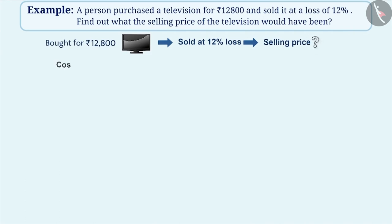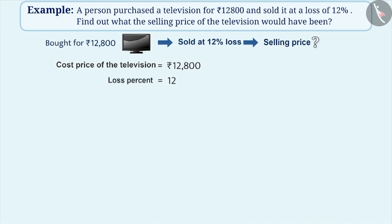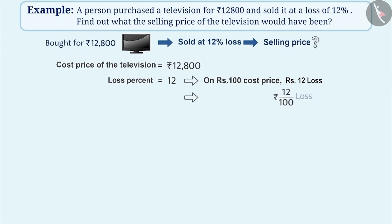Cost price of the television is equal to 12,800 rupees. Loss percent is 12. This means on every 100 rupees of cost price, there is a loss of 12 rupees. We can say that on every 1 rupee of cost price, there is a loss of 12/100 rupees.